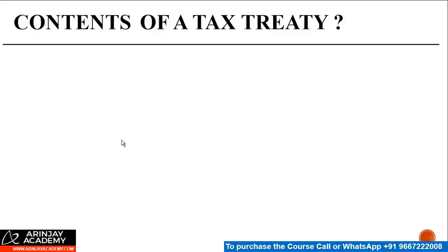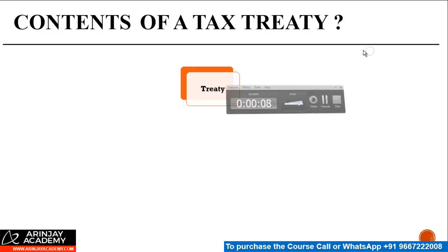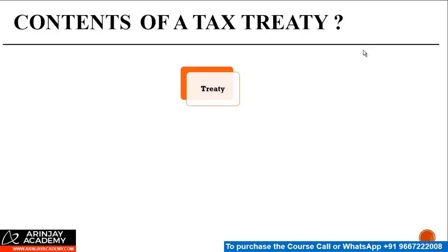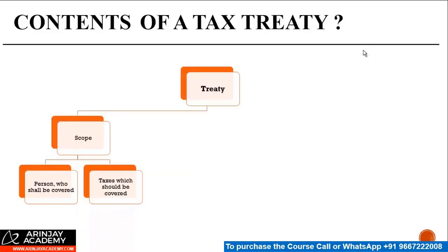So what are the contents of a tax treaty? How is the tax treaty basically structured? Generally in a treaty, you would find three broad parts.